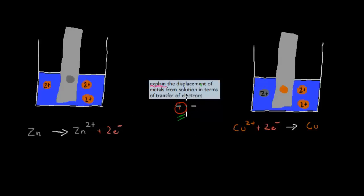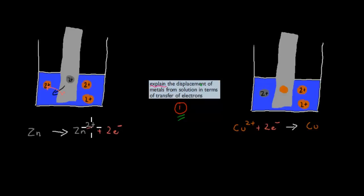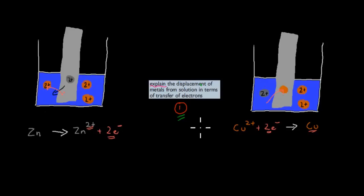This here is covered in video number one. First is explain the displacement of metals from a solution in terms of their transfer of electrons. We have zinc and copper ions. Zinc will lose two electrons and become 2+, moving into solution. Those two electrons then move to copper, and the copper 2+ becomes elemental copper, moving from solution onto the metal — displacing zinc. That's how the transfer of electrons makes that happen.